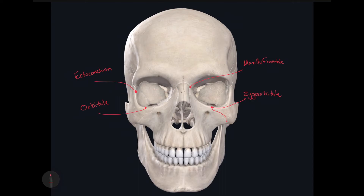If we go towards where the mouth would be and identify the second molar tooth on the superior dental arch, we find our next craniometric point. Just above it on the alveolar border — just above the second molar tooth on the superior dental arch — that is going to be called the ectomolare. And if we go inside the mouth on the same tooth, on the lingual border, on the opposite side from the ectomolare, that's called the endomolare. I'll identify it before I end this video.